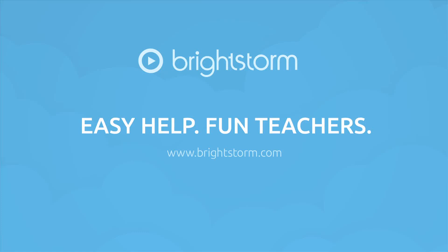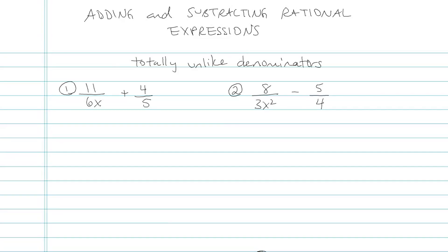BrightStorm has thousands of high-quality videos covering all major subjects. Please check out more at www.brightstorm.com. Adding and subtracting rational expressions when you have totally unlike denominators, meaning they have no common factors at all.